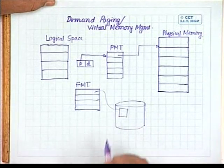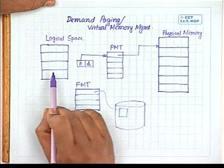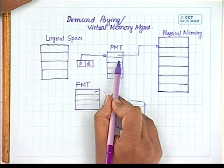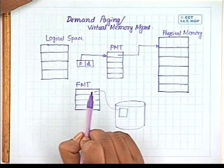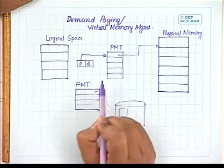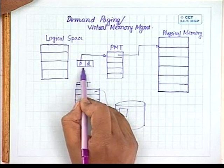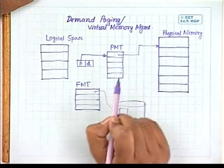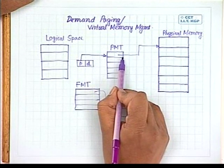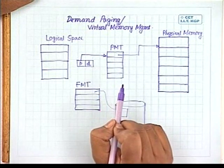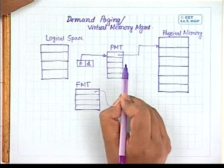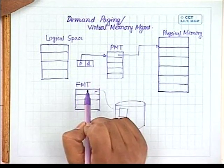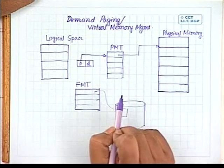Whenever the CPU wants to access any memory location, it generates the page number and goes to the page map table. In the PMT, there is a bit called the interrupt bit. If the interrupt bit is 0, the page exists in the physical memory and you simply convert the logical address to a physical address and access that location. If the page is not loaded in the main memory, the interrupt bit will be set to 1, generating what is called a page fault interrupt — meaning the CPU is trying to access a page not present in main memory.